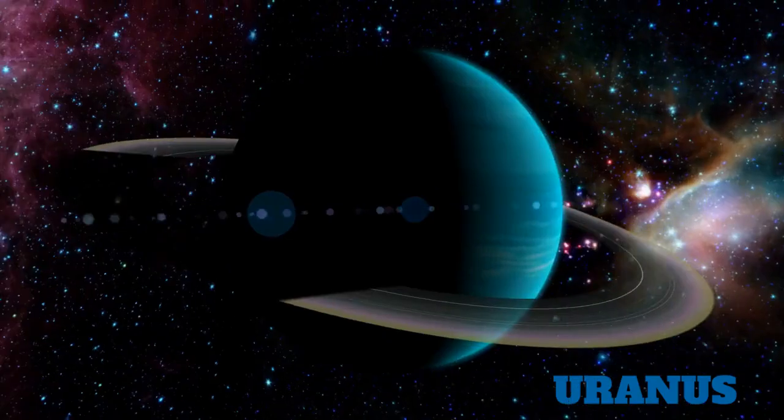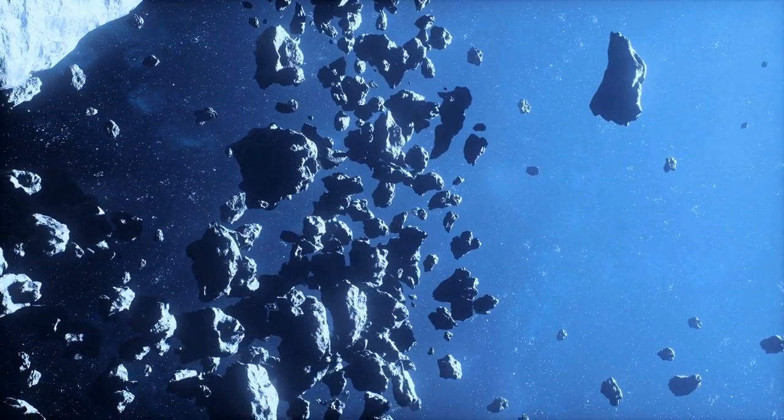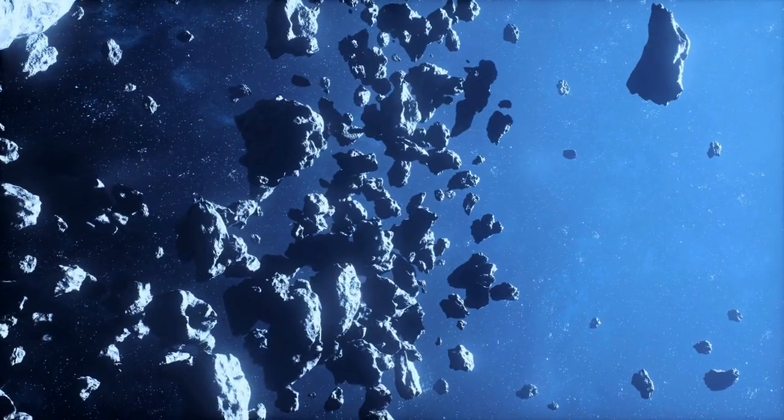The seventh planet from the Sun, Uranus, the original ice giant. It's the third largest planet in our solar system at four times wider than Earth.